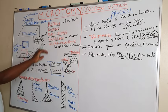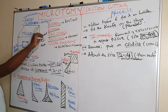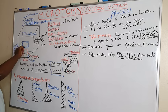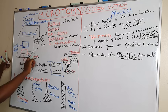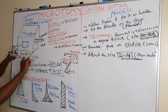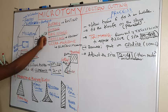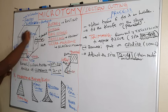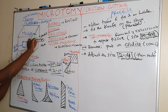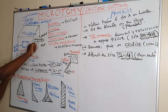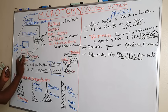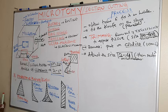Use your right hand to hold the handle, and the left hand holding the forceps. As you are cutting the sections, keep holding the ribbons using the forceps to avoid them accumulating on the stage.